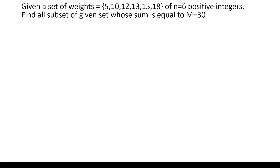Initially the subset weight is 0. We represent it as a node where the current subset weight is 0, and the remaining weight that can be included in the subset is 5+10+12+13+15+18, which is equal to 73.